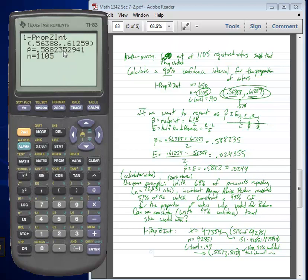And again, our way of interpreting that was we are 90% confident that this interval between .56388 and .61259 contains the true value of the actual population proportion of all voters who voted. So we're pretty confident that it's between 56% and 61% roughly.